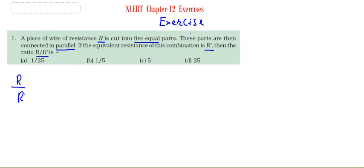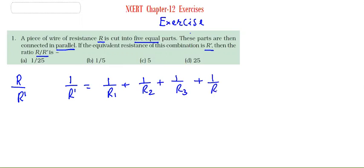What is R'? R' is the parallel equivalent resistance. When we have a parallel connection, the formula is: 1/R' = 1/R1 + 1/R2 + 1/R3 + 1/R4 + 1/R5. How many pieces do we have? 5 pieces.